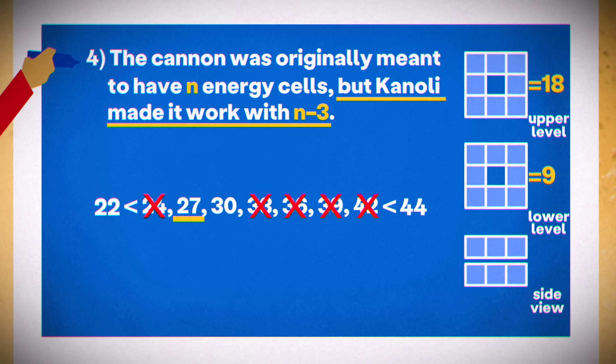And 27 is the one you should use. To total nine, the lower level must have seven ones and one two. If you put the two in a middle chamber, the upper level would have too many cells. So the two has to go into a corner, and you can then place the upper level like this.